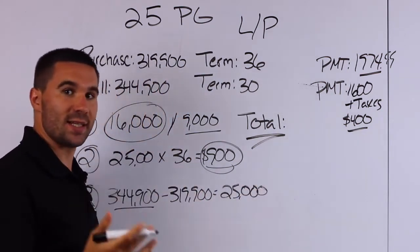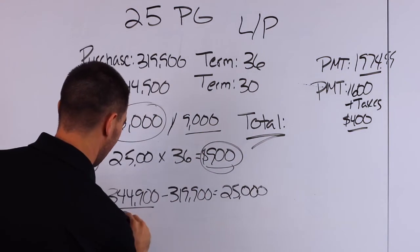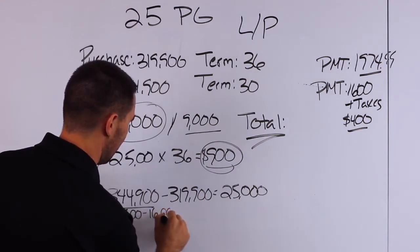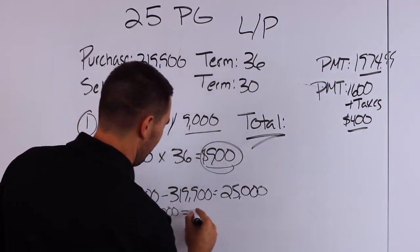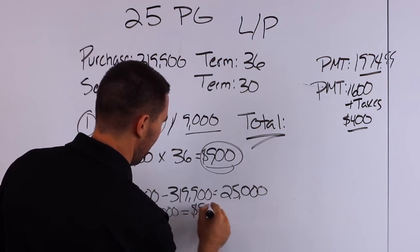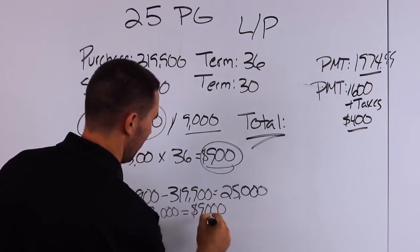We've already taken in $16,000. So you're going to take that $25,000 and minus the $16,000, which is going to give us another $9,000.